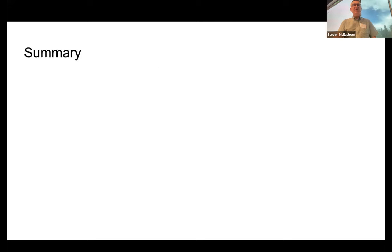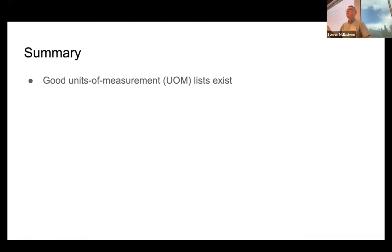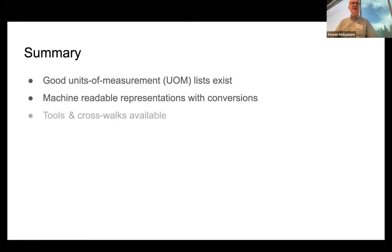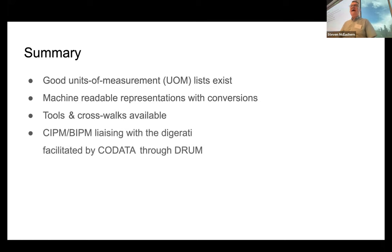To wrap up: there are some good units of measurement lists in existence, some of them providing real-time machine-readable representations with conversion factors on request. There are tools and crosswalks available for some of them, and the CIPM is now liaising with the digital community, partly facilitated by CODATA through the DRUM project.